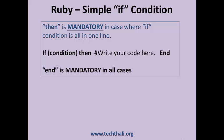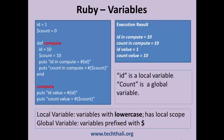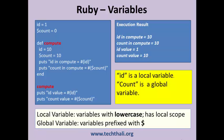Let us quickly look at Ruby variables. Like any language, it has local variables. Ruby also has global variables. In this example, id is a local variable and count is a global variable. Local variables are represented in lower case. Global variables are prefixed with a dollar sign.